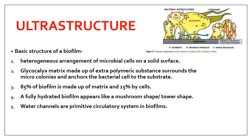Now, what is the ultrastructure of the biofilm? The basic structure includes: first, a heterogeneous arrangement of microbial cells. Various types of microbial cells are present, and they are attached to a solid surface - if microorganisms are freely present, that is not a biofilm. Next, there is formation of a glycocalyx matrix made up of extracellular polymeric substances, which surrounds the microorganisms and is produced by the bacteria themselves.